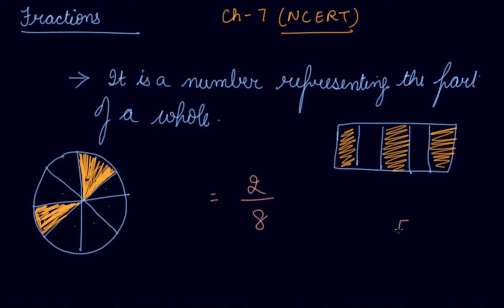So, we will take 5 as the denominator. In the numerator, we will take the shaded parts: 1, 2, and 3. That is 3 by 5. This is your fraction.